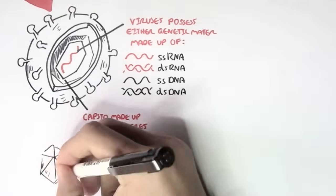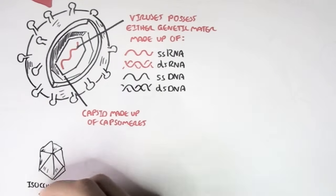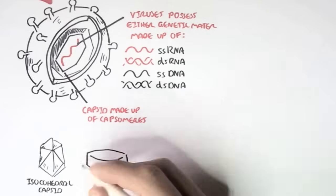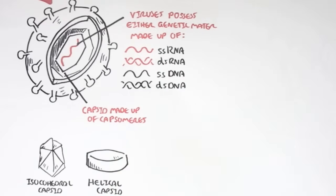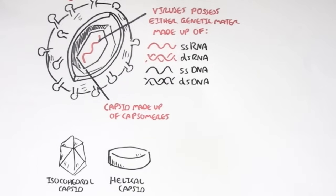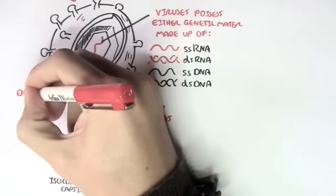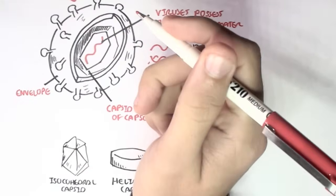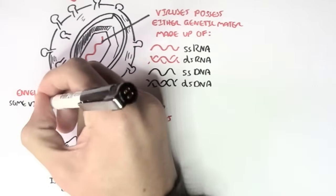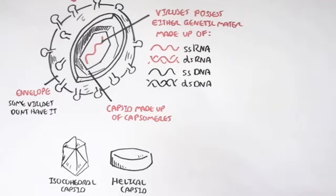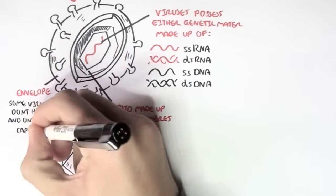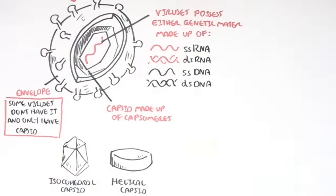The capsid, which contains the genetic material of the virus, can be either an icosahedral shape or a helical shape. Some viruses also have envelope, usually consisting of a lipid bilayer, that carry the capsid and the genetic material. But again, some viruses don't have it, and they only have the capsid itself.